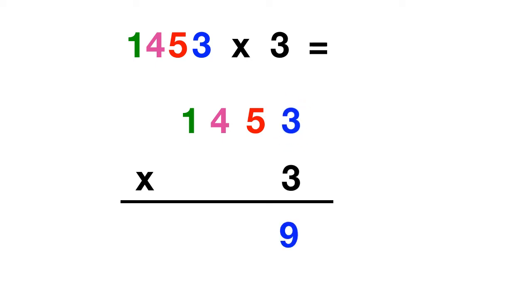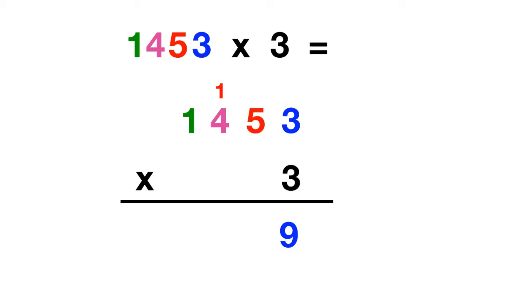Next we multiply 3 times 5 tens. 3 times 5 is 15, which we write by regrouping. Next we multiply 3 times 4 hundreds. 3 times 4 is 12, plus that 1 gives us 13.